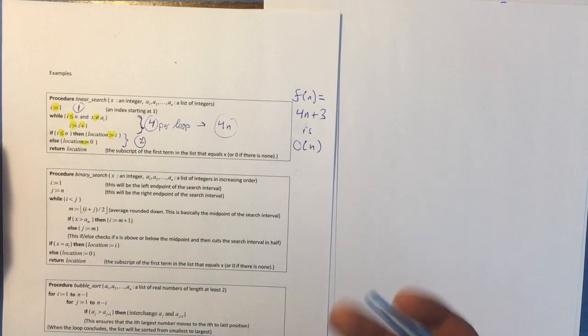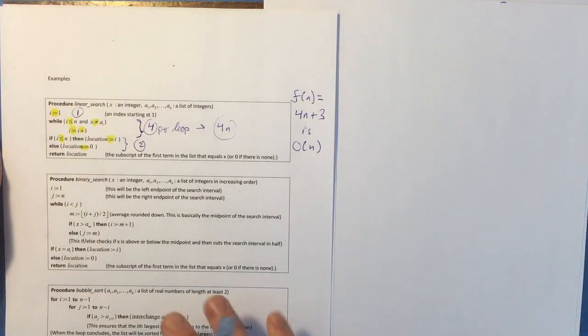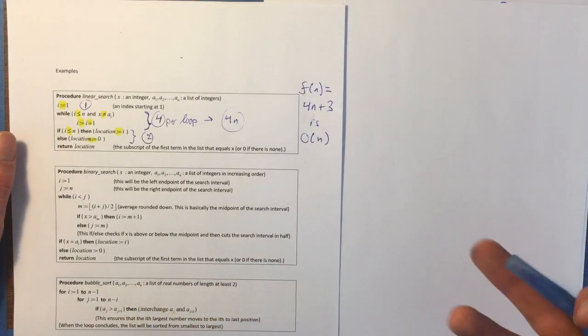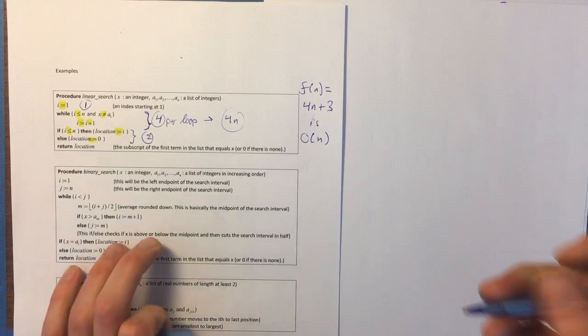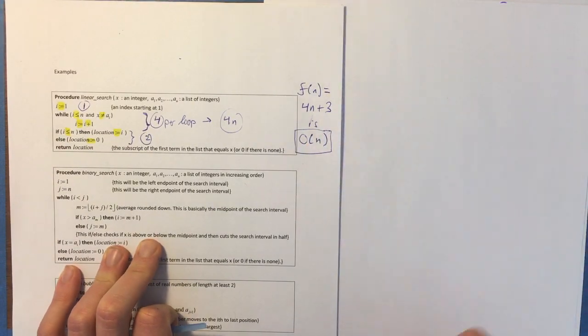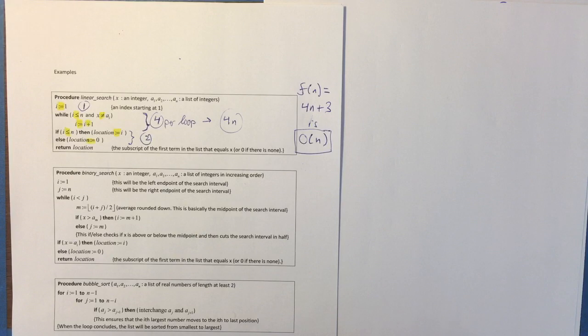So when you are analyzing time complexity, you can get as detailed as you want with what types of constant time operations you're going to check. But the real main focus is generally on what is the order of that complexity. And in this case, it's big O of n.